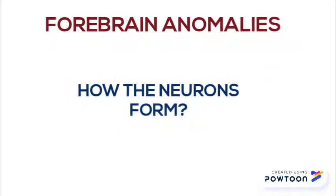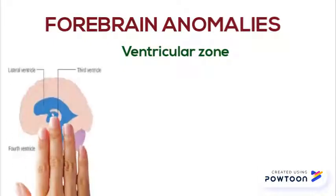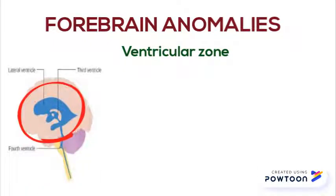The neurons form in the ventricular zone — the zone which surrounds the ventricle. From here, the neurons move into the cortical zone with the help of one of two pathways: the radial pathway for excitatory neurons, and the tangential pathway for inhibitory neurons.